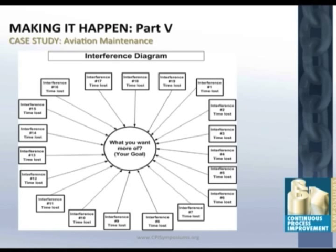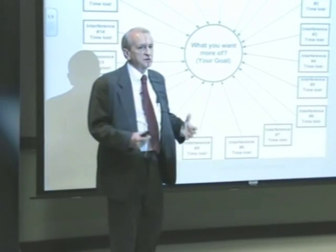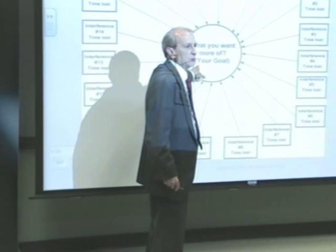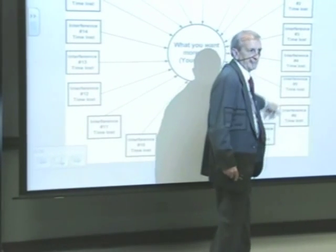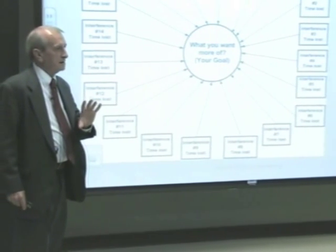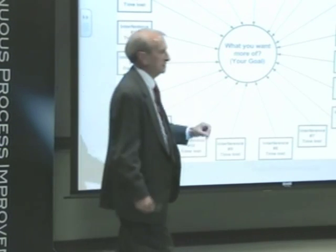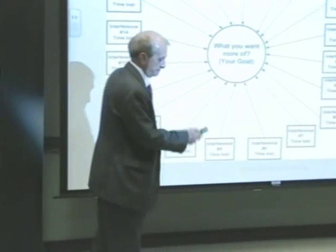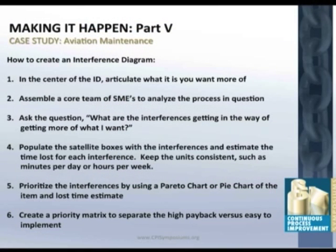Here is the Interference Diagram I was telling you about — it's very similar to what Kevin used. Think about this: what do you want more of? In our case it was more helicopters ready when we needed them. Then you ask: what are all the reasons why I'm not getting more of what I want? Those are your interferences. The core team — the subject matter experts, the people doing the work — we asked them what things are interfering with getting more of what you want.